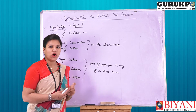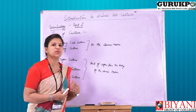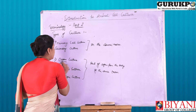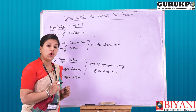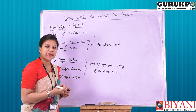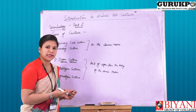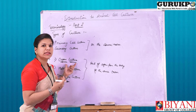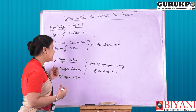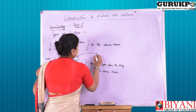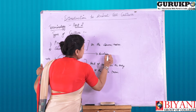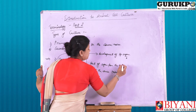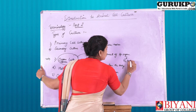Organ culture means to develop the culture of a specific kind of organ in vitro conditions — that is, we provide artificial conditions outside the body in the laboratory. We develop a specific kind of organ which has the ability to retain the physiological conditions which the specific organ retains when it is present inside the body.